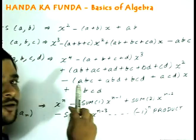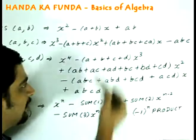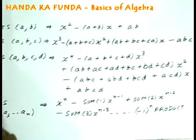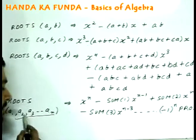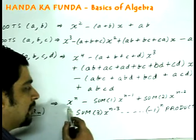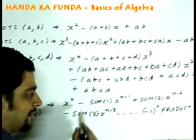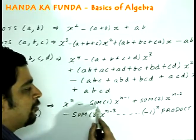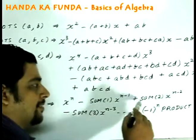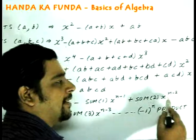So let us look at the comprehensive equation or the general form in this case. That is considering an equation which will have n roots a₁, a₂, a₃ till aₙ. In that case the first term will be xⁿ minus sum of the roots taken one at a time, sum of the roots taken two at a time x to the power n.